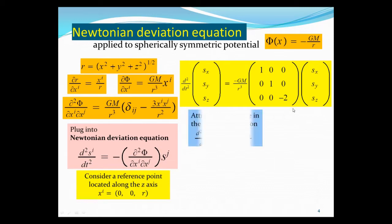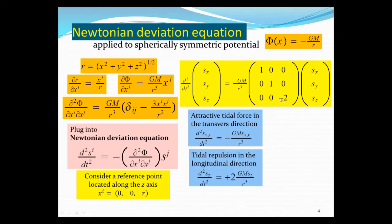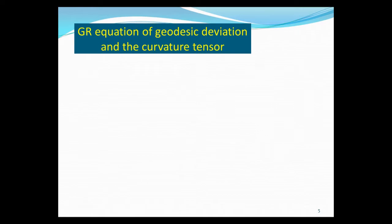So this is the deviation equation for spherically symmetric gravity potential, like for the case of lunar gravity. And you notice you have attractive force in the transverse direction, in the x, y component, because you have a minus sign. So you have attractive force in the transverse direction. And in the longitudinal direction you have a plus sign. So therefore it's stretching, it's repulsion. That's exactly what we talked about. You have longitudinal stretching and transverse compression. Longitudinal stretching and transverse compression. That explains the tides.